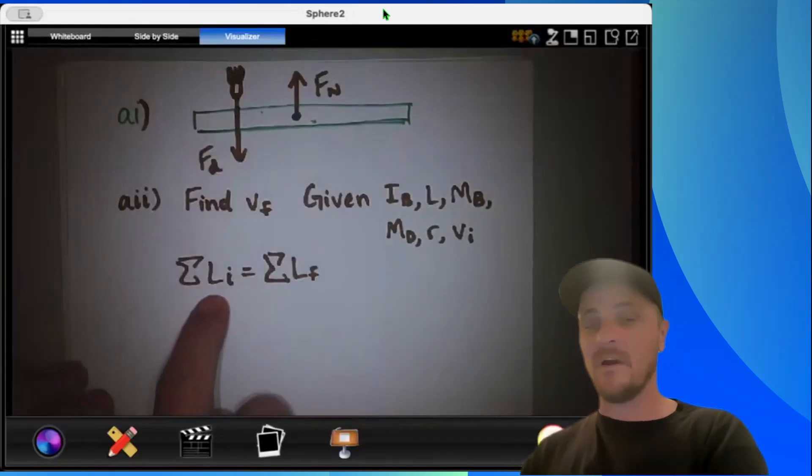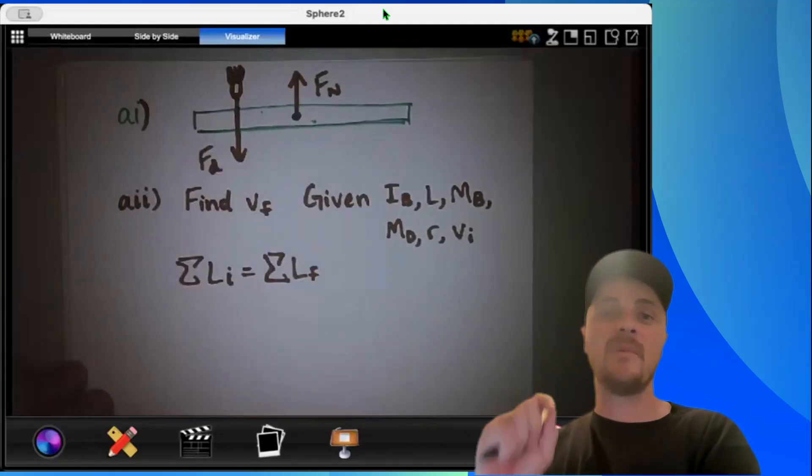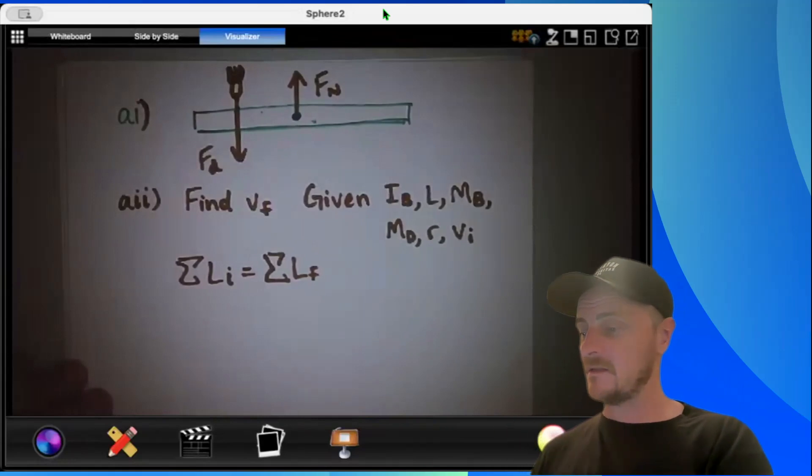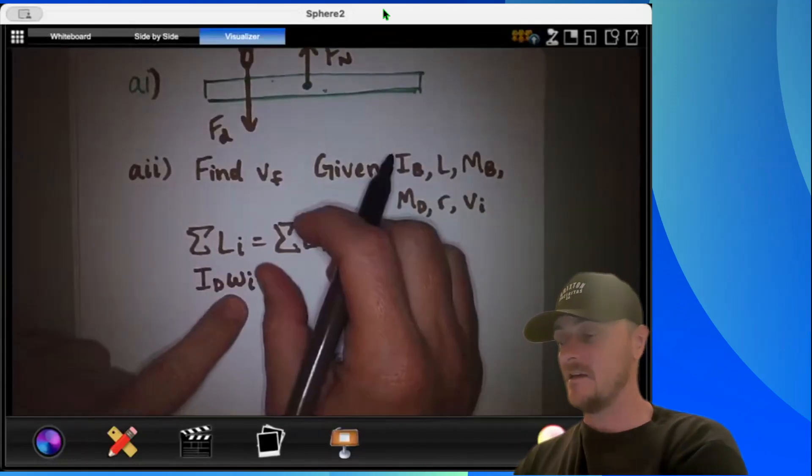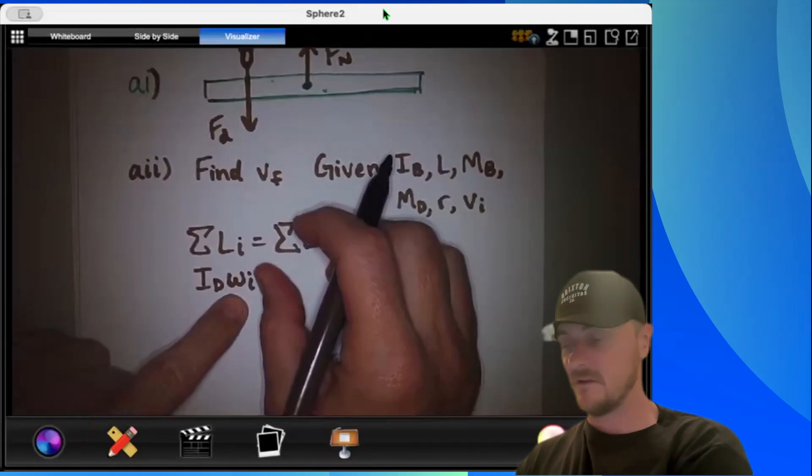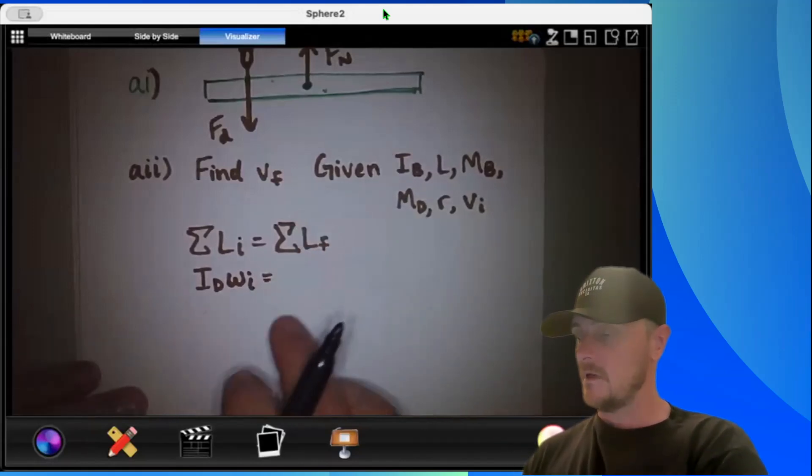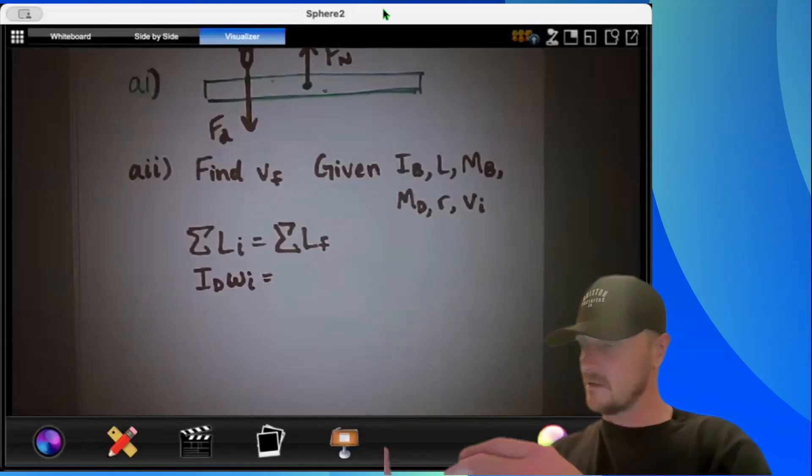Therefore, my initial angular momentum is completely because of the dart and that's it. I hope that made sense. So what I'm going to write here is I have id, the dart times the initial angular velocity of the dart, and we will expand this idea in a moment. This equals: now what's going on after this collision takes place?